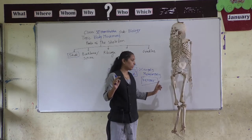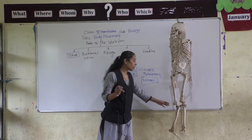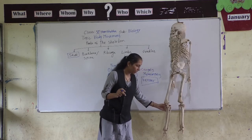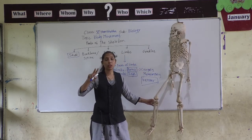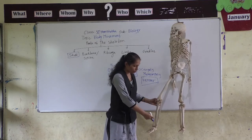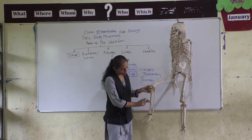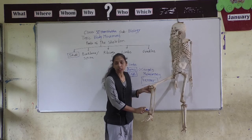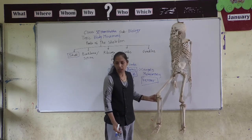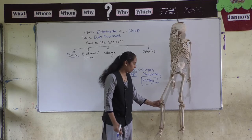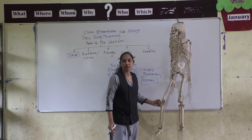The lower portion of the hind limbs has two bones. The bigger bone is called Tibia, and the smaller one is called Fibula. So the lower leg consists of Tibia and Fibula.